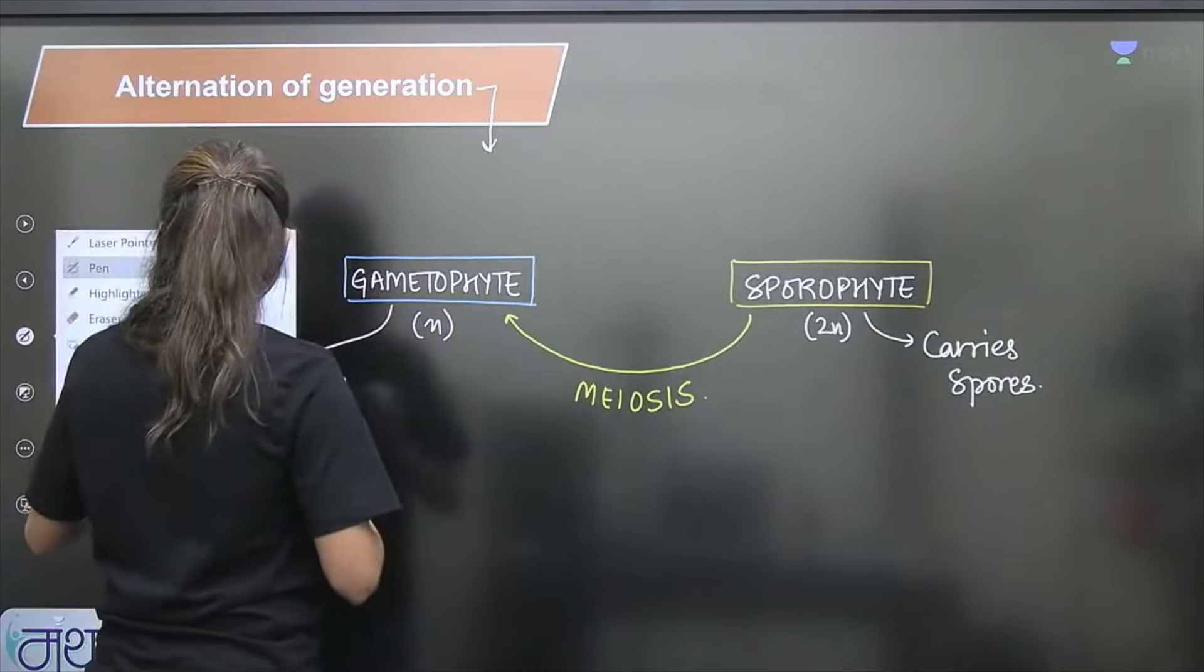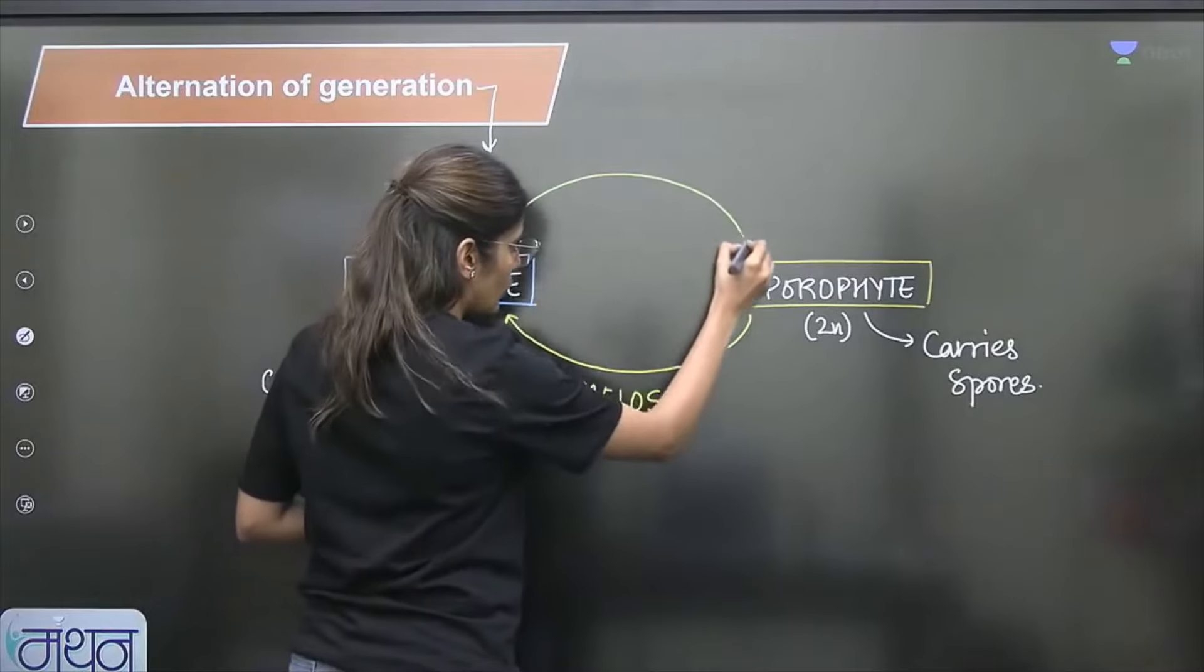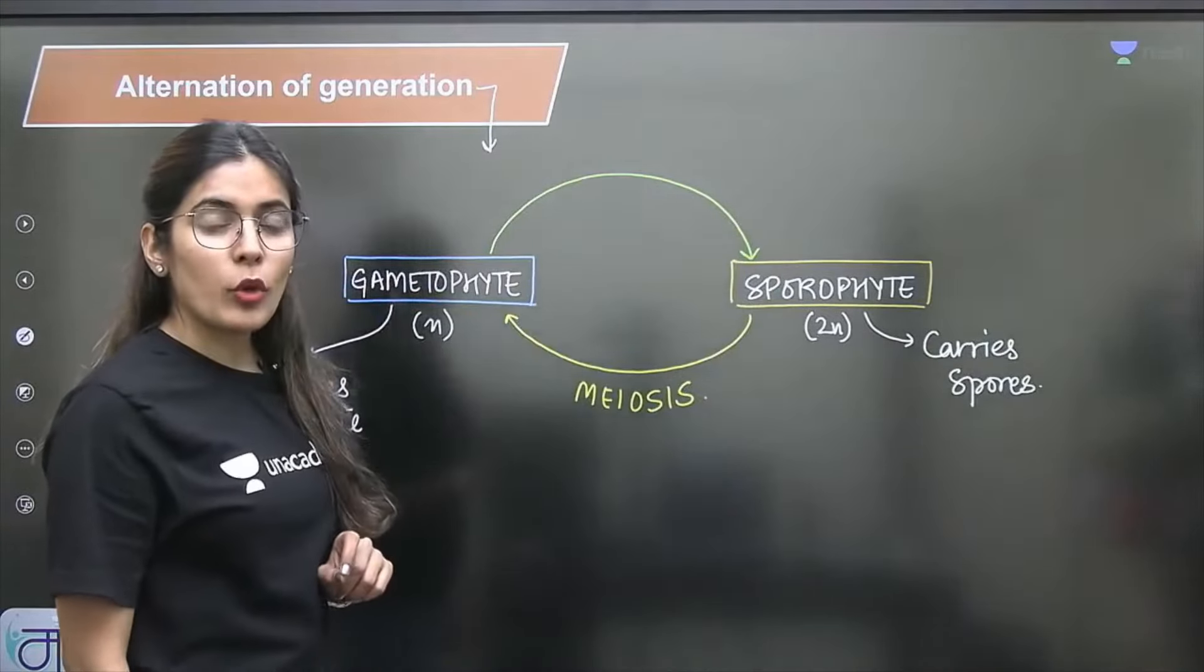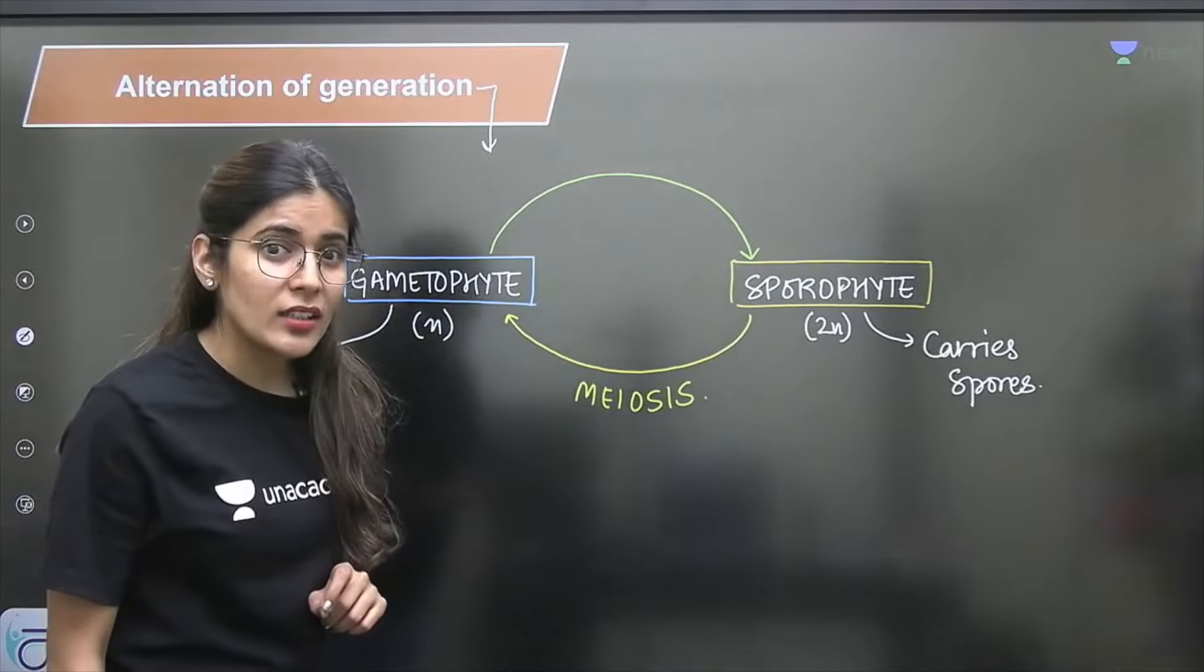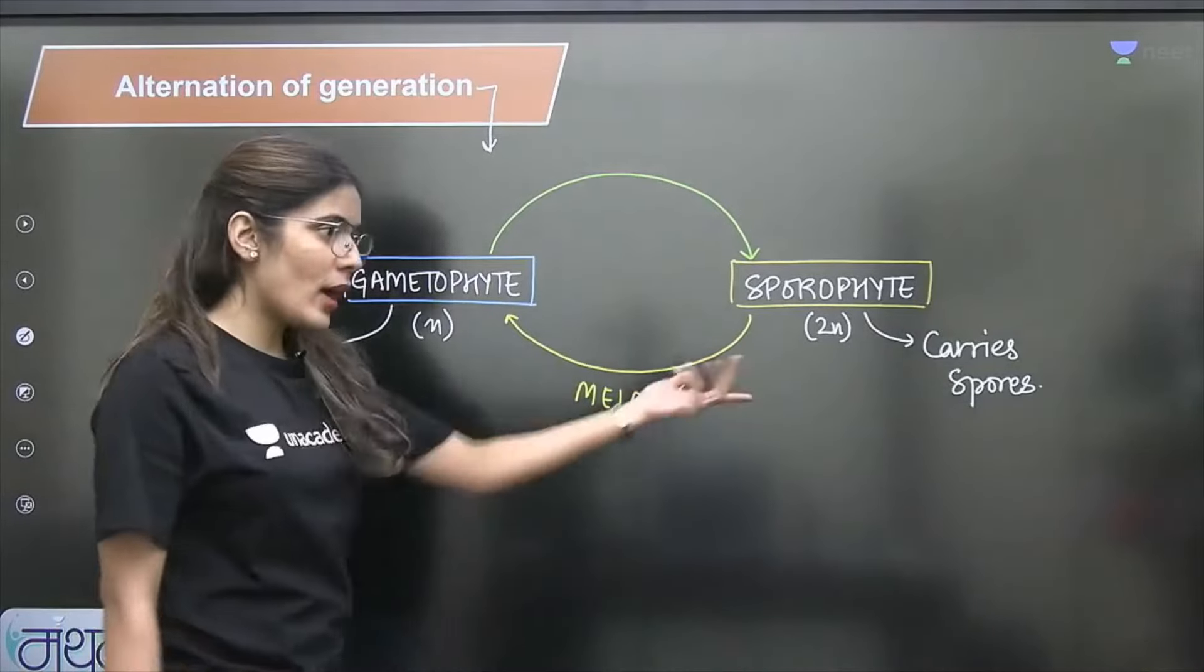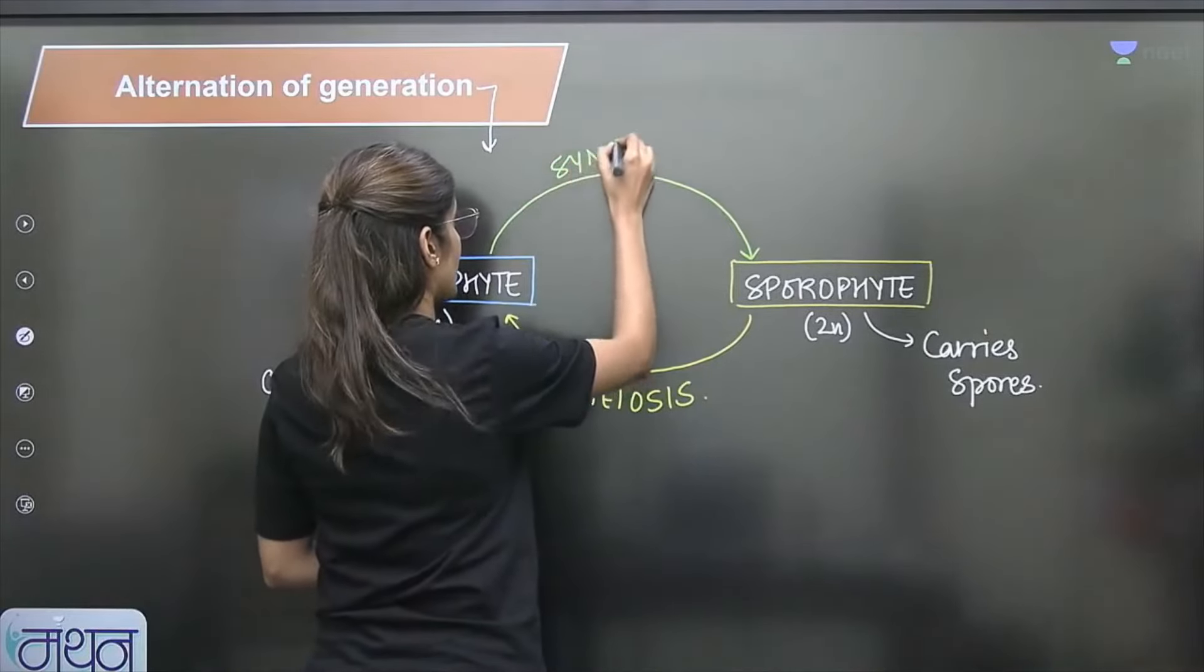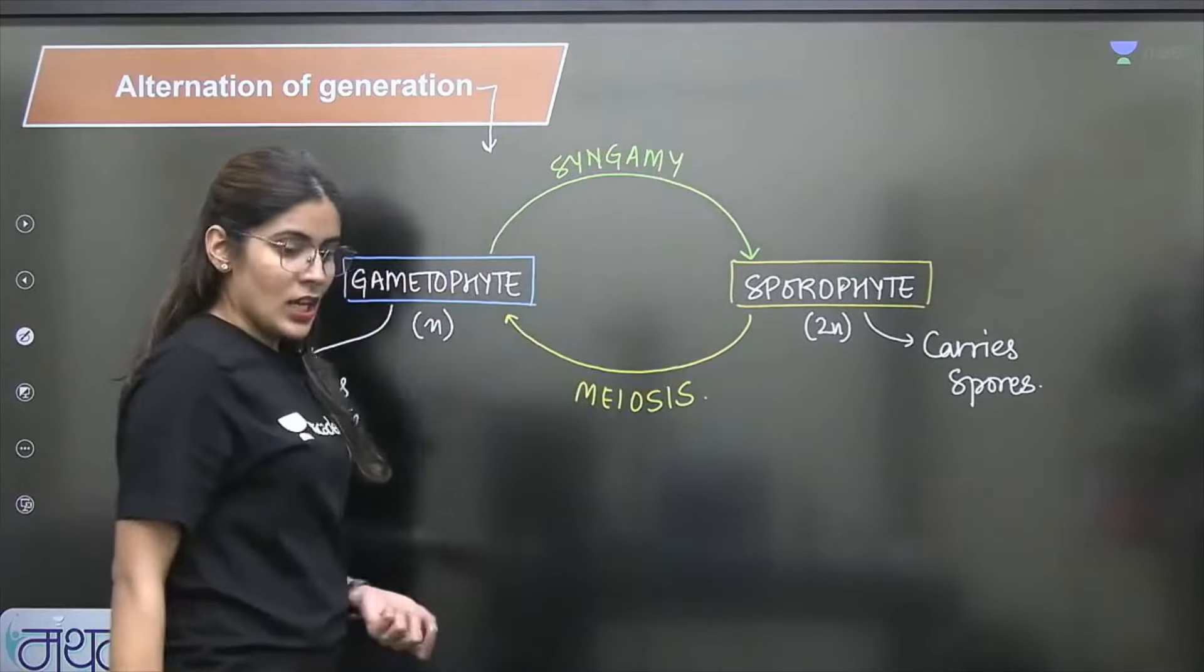If you want to go from haploid to diploid, then mitosis will work for growth. Mitosis is equational division. But to go from haploid to diploid in ploidy, syngamy or fertilization will work.